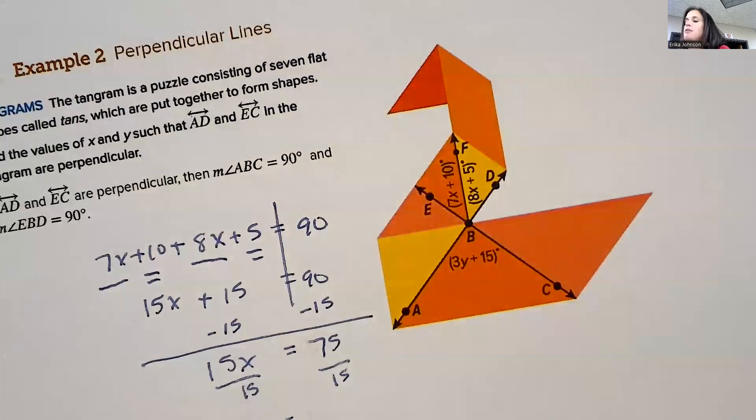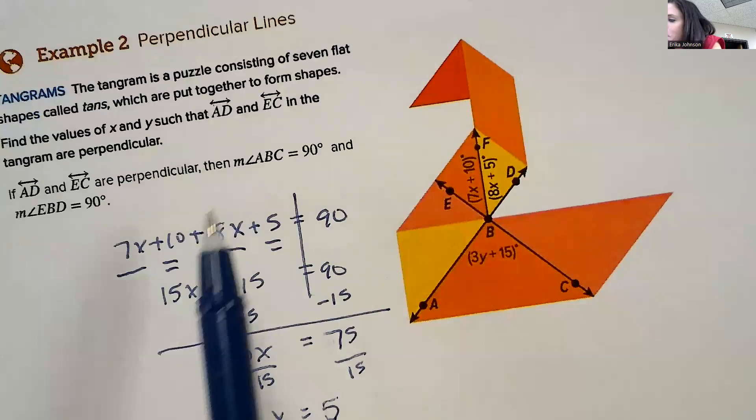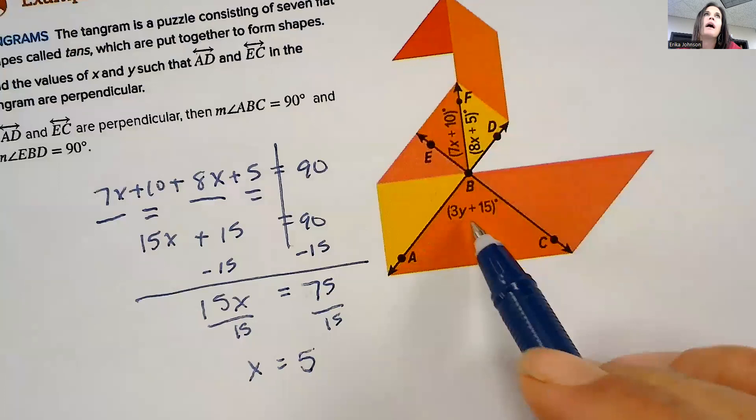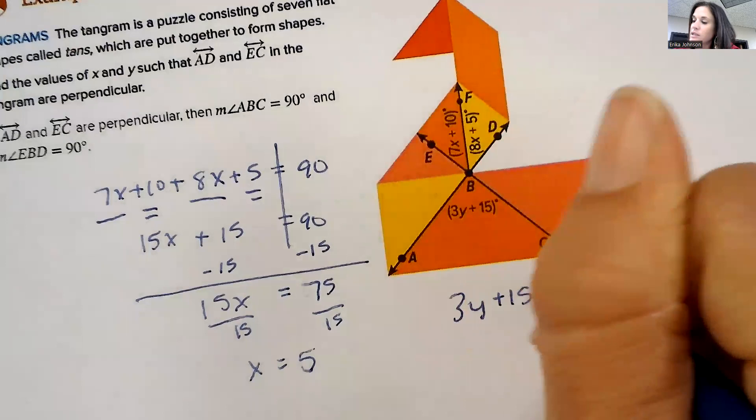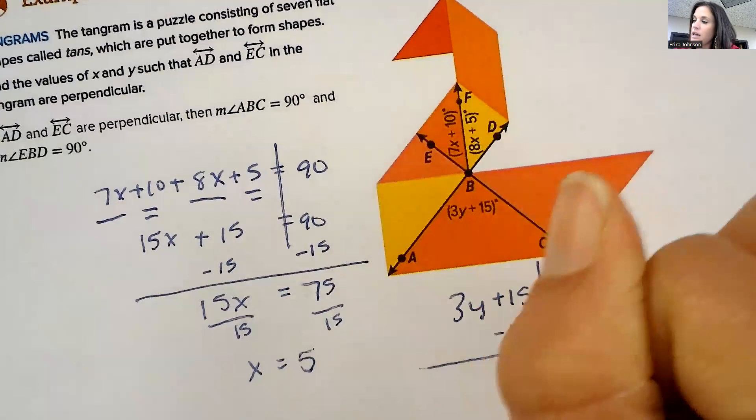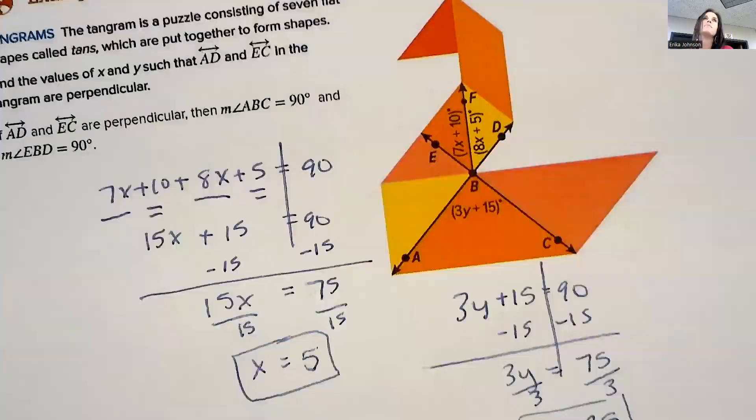And then we need to find Y. The whole angle there is equal to 90, so it would be 3Y plus 15 equals 90. Subtract 15: that'd be 3Y equals 75. And divide by 3, so Y would equal 25.